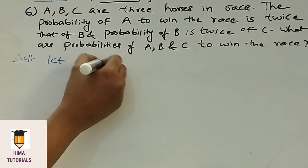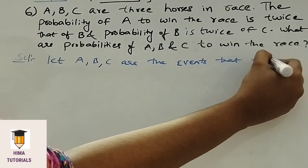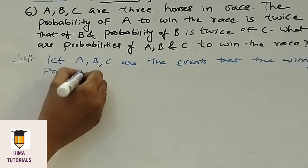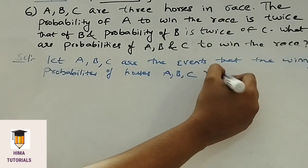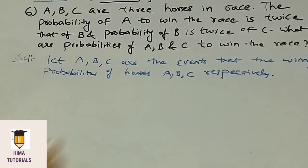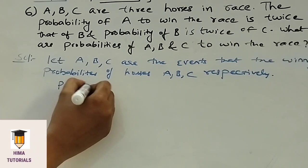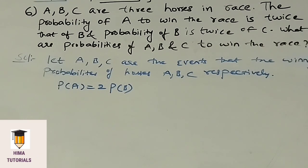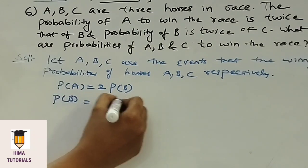Let A, B, C be the events that the winning probabilities of horses A, B, C respectively. In the given question, the probability of A to win the race is twice that of B. That means P of A is equal to 2 times of P of B. And probability of B is twice of C, that means P of B equals 2 times of P of C.